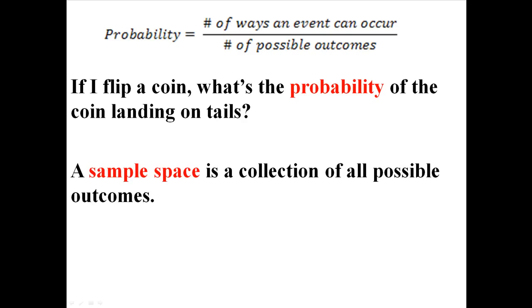So I'm going to move that up there. Now, a sample space is a collection of all possible outcomes. So imagine if you were to flip a coin, you could either get heads or tails. So your sample space is heads and tails.